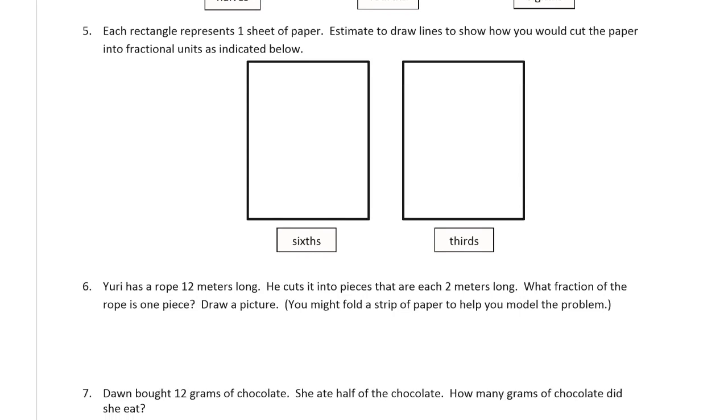Each rectangle represents one sheet of paper. Draw lines. Estimate to draw lines to show how you would cut the paper into fractional units as indicated below. We have sixths and thirds. Thirds, I'm going to go just straight across here for the thirds. And those are as close as I'm going to get them. And sixths, I'm going to need twice as many of those. So about... I'm thinking about half of each third. That's how I'm making my estimate in the third lines. So there's my sixths, and there's my thirds. And just make sure that you have one, two, three, four, five, six equal parts for the sixths, and one, two, three equal parts for the thirds.